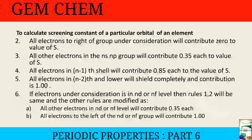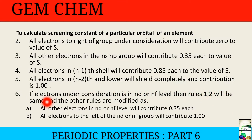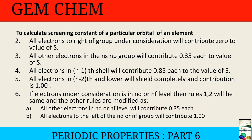There is an additional sub-rule: if the electron under consideration is in an nd or nf level, rules 1 and 2 (grouping) remain the same, but other rules are modified. All other electrons in the same nd or nf level contribute 0.35 each, and all electrons to the left of the nd or nf group contribute 1.00 each.